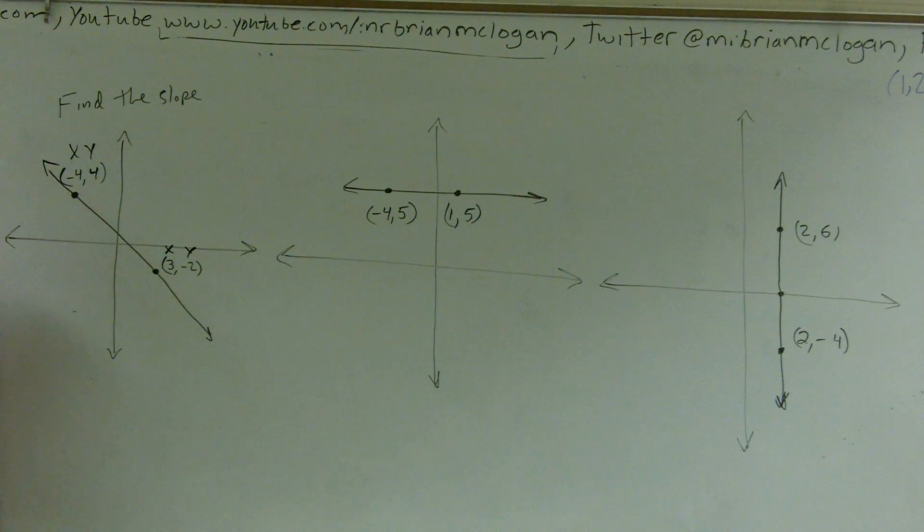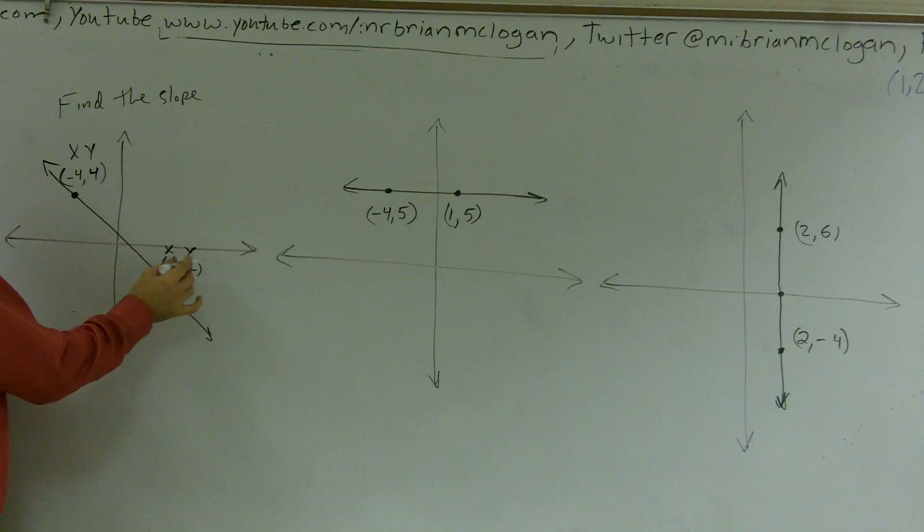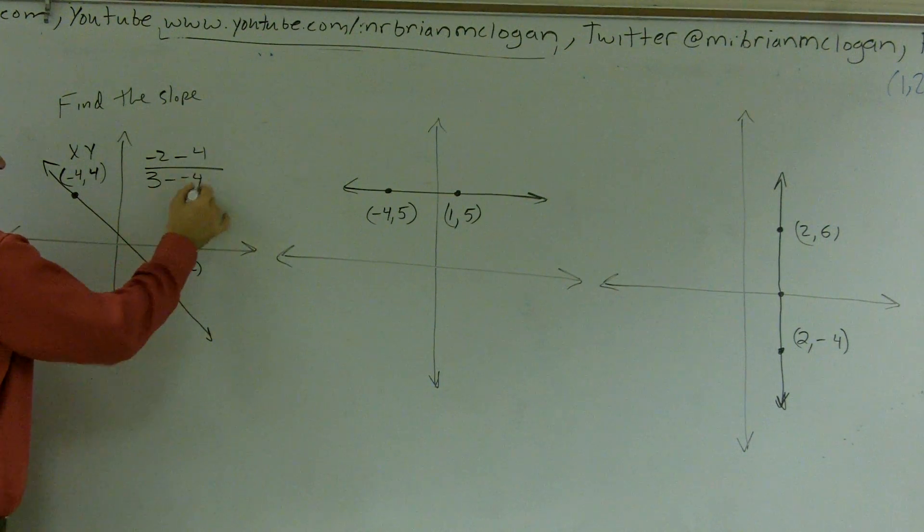Then we just subtract our y's, alright? So I'm just going through this. If I want to find the change in these two y values, I do my y, negative 2 minus 4, all over 3 minus negative 4.